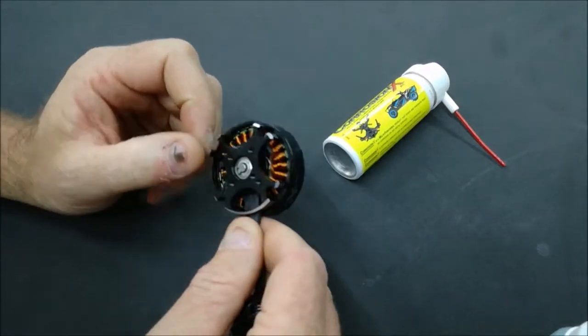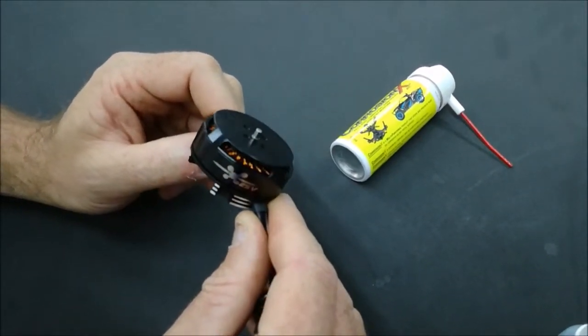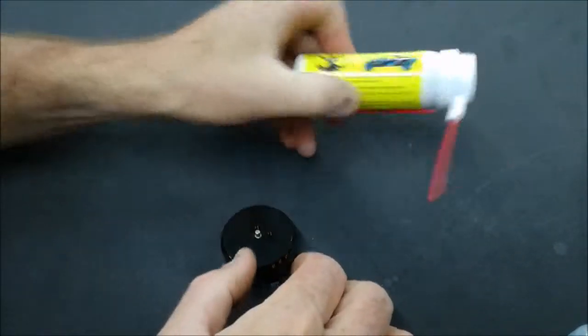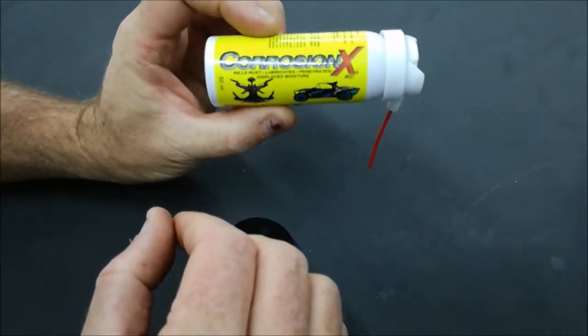What we do is we install our motors with stainless steel bearings and then we treat the inner part of the housing using this amazing product called Corrosion X.